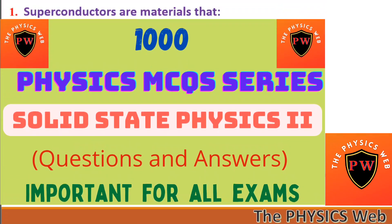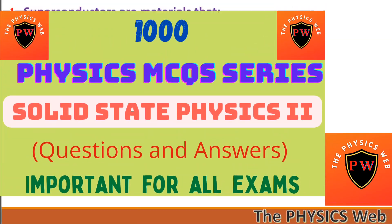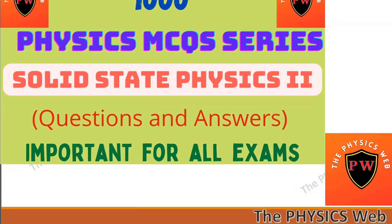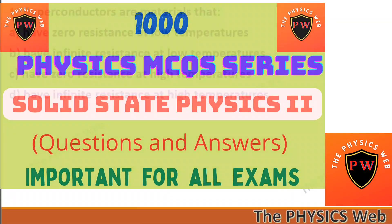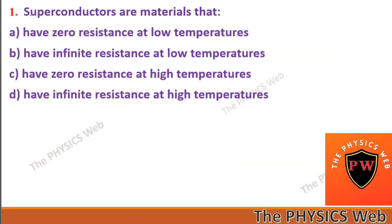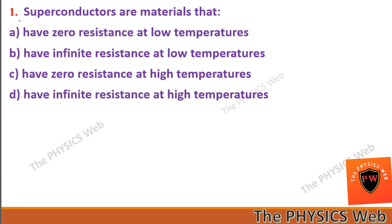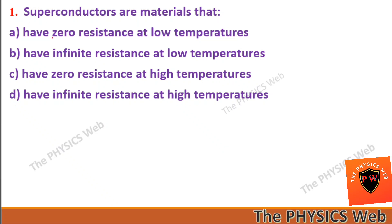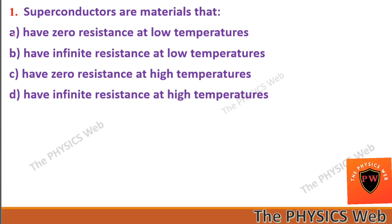Let's start. Question number one: superconductors are materials that have zero resistance at low temperature. So A is your correct option.